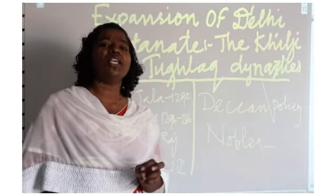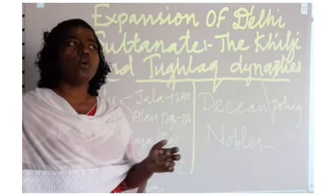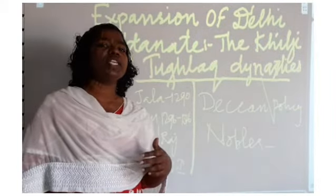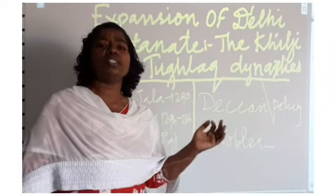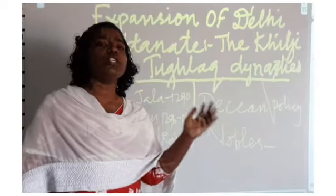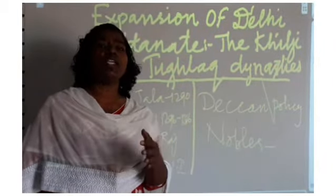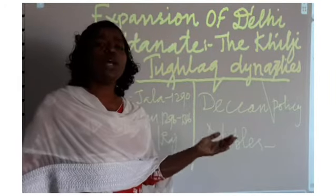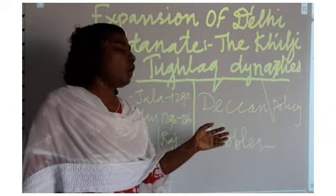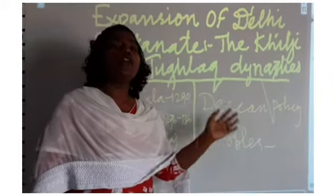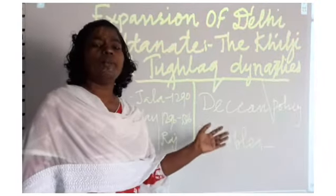He had a horse force and he branded high quality horses. The other system is called Chehra, which is the descriptive roll of the soldiers. The soldiers were assigned their respective duties. He also had different offices to watch over the duties of the soldiers, and a spy system was in place.